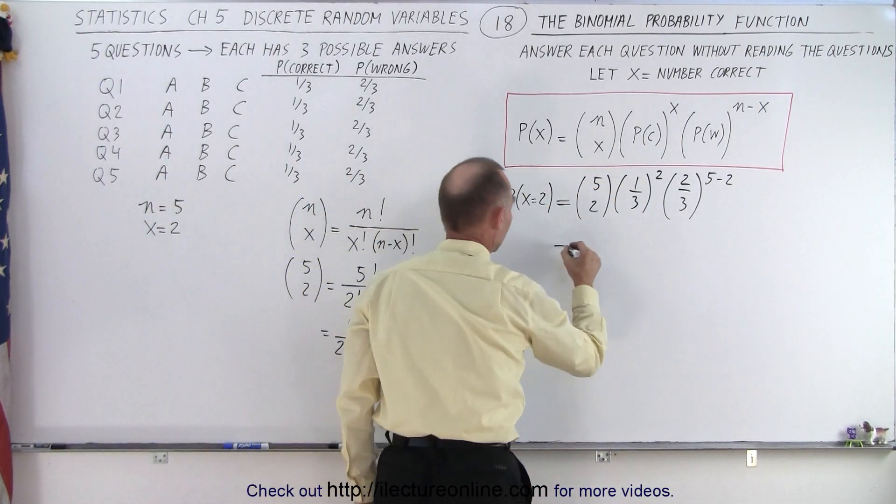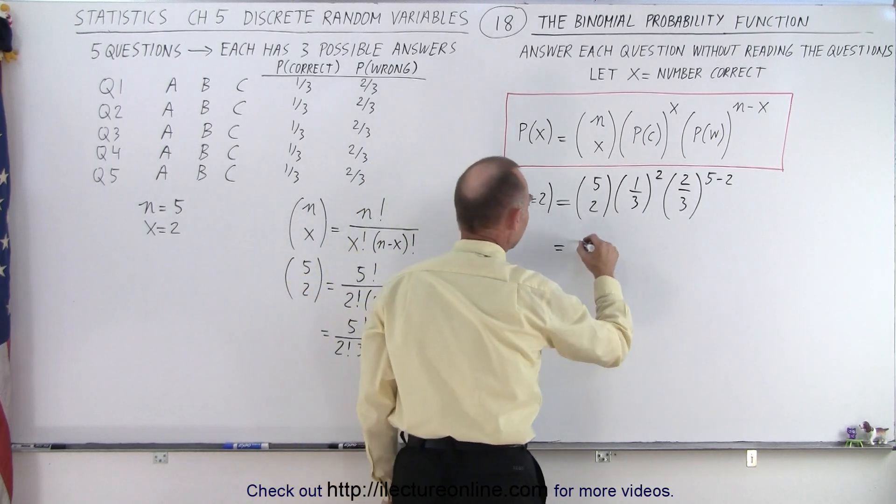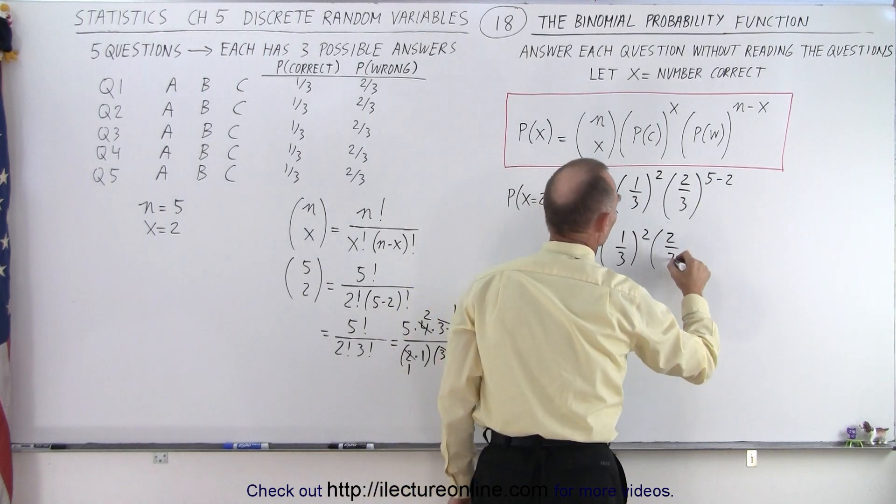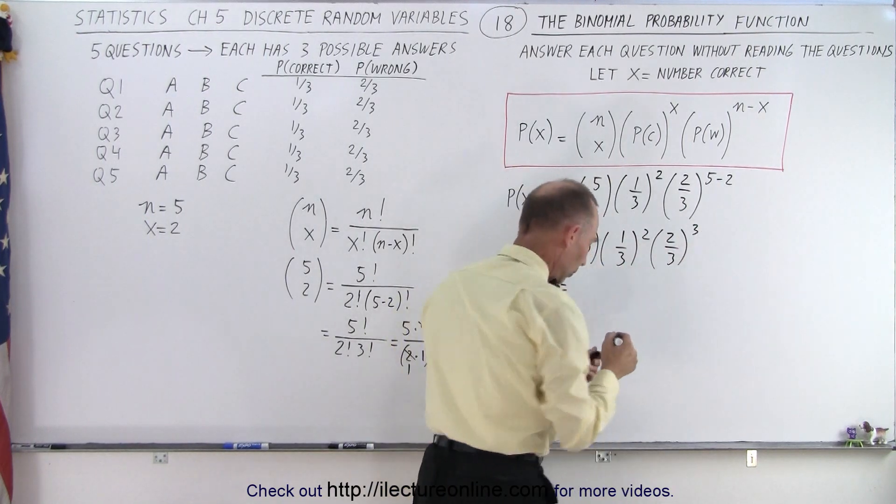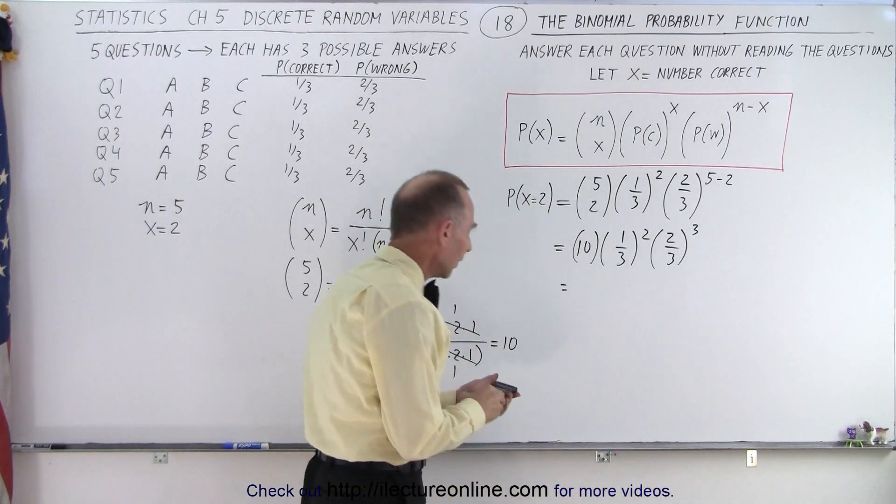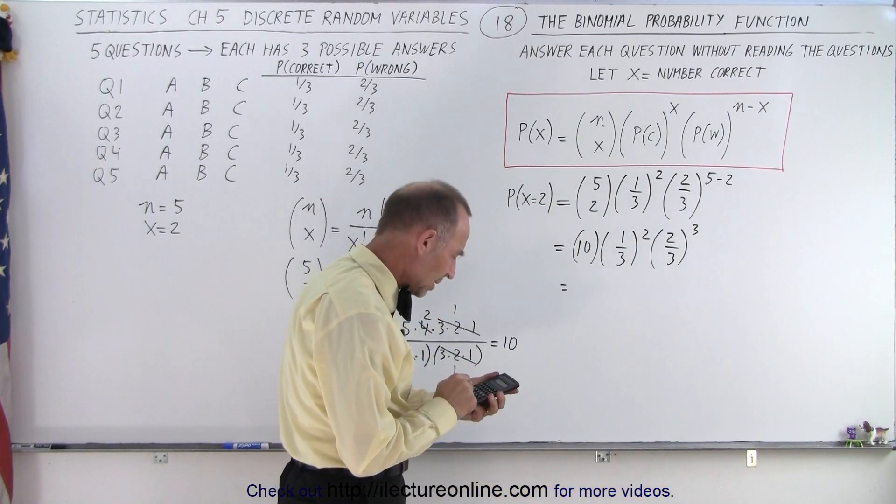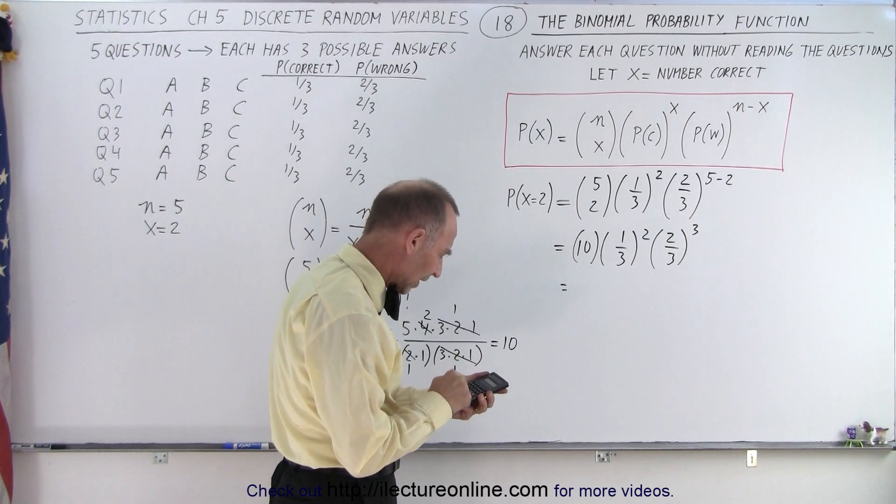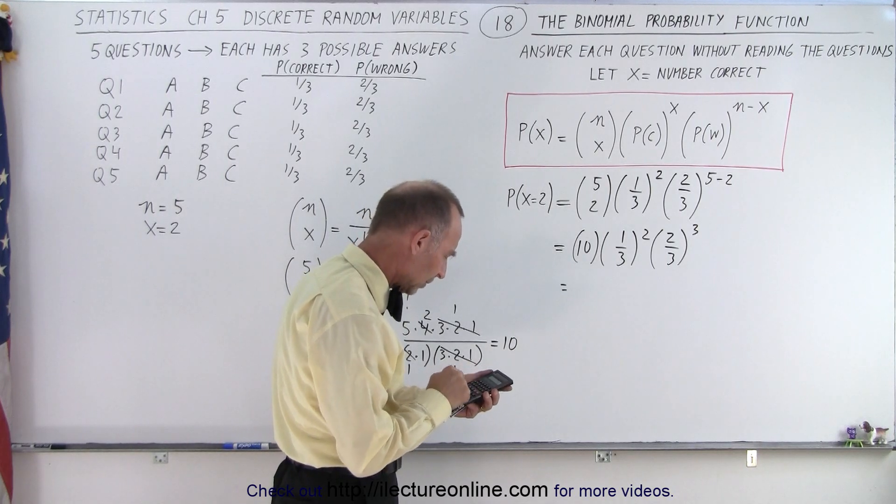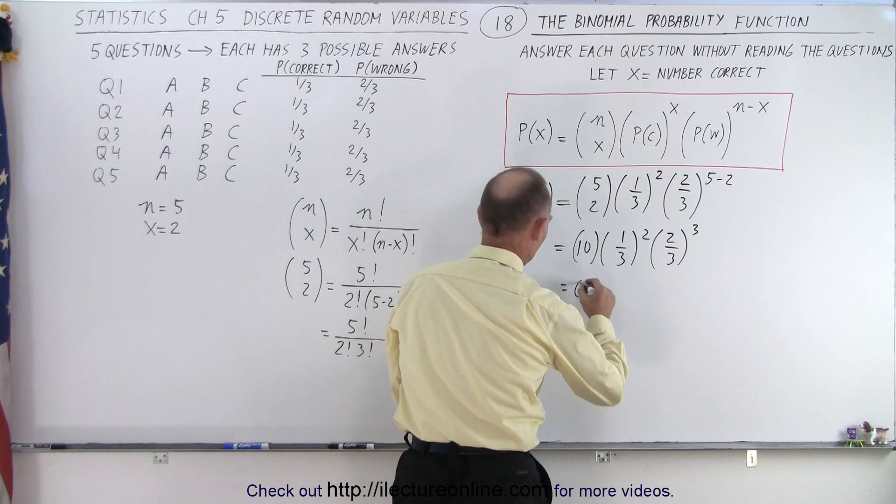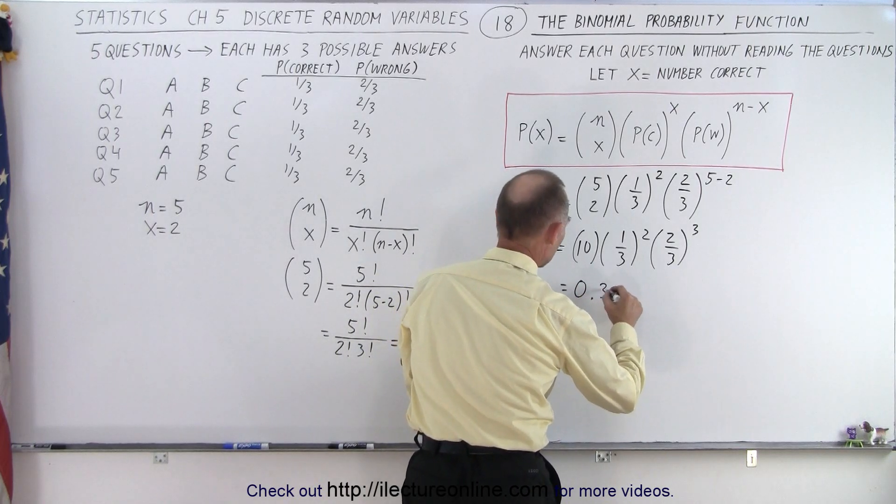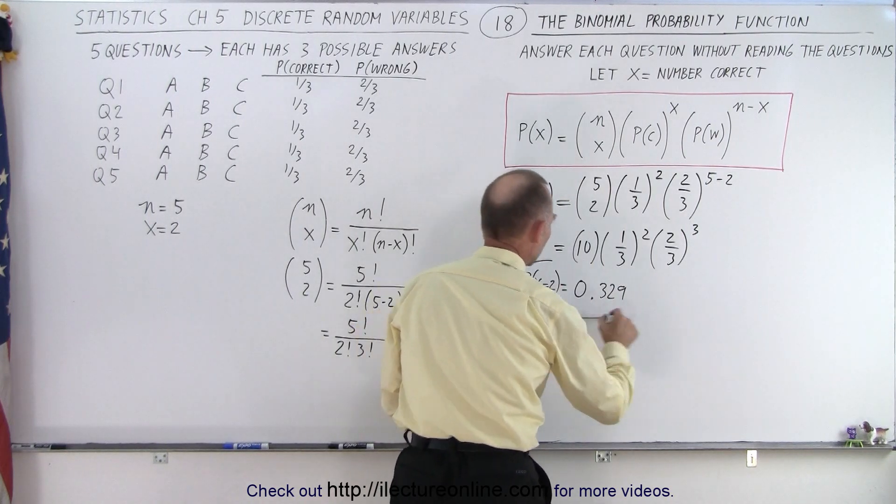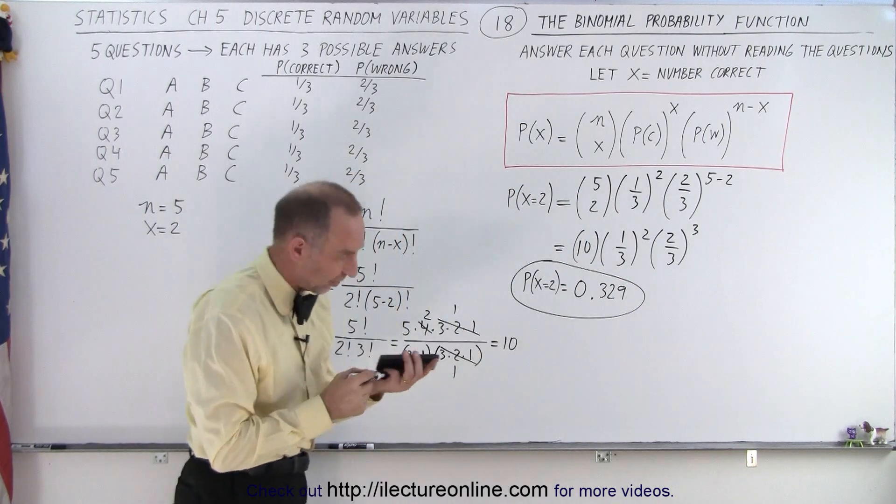So this becomes the following. So this is equal to, as we saw, ten multiplied times one-third to the second power and multiplied times two-thirds to the third power. And of course, now you grab a calculator. So one divided by three raised to the second power, times two divided by three raised to the third power. So this ends up being 0.329. So the probability that x equals two is 32.9%, essentially.